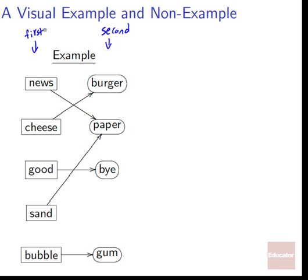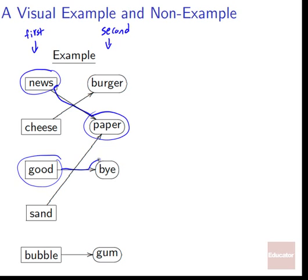You might wonder: news goes to paper and sand also goes to paper — isn't that a problem? There's no problem with that. We only said that the function has to give us something when we point at something in the first set. We never said it has to be a different thing for every single input. It just has to give us something. Everything we call out on the first side — news, good, sand — the function responds by telling us the corresponding output.